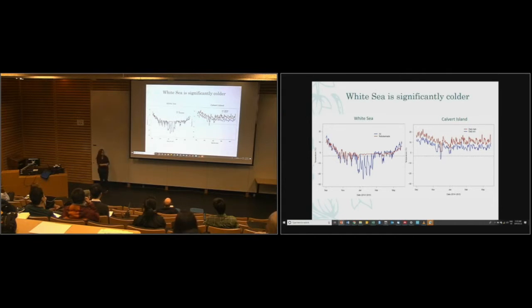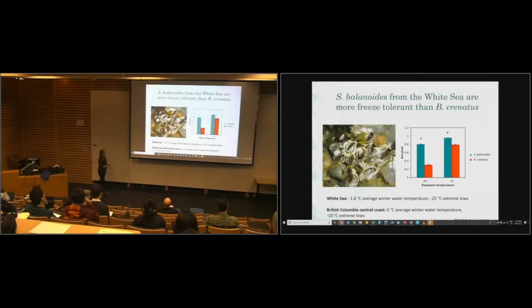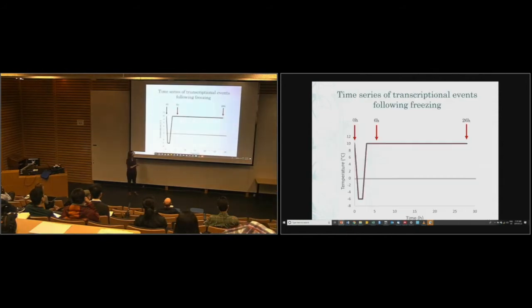What you can see in general is the White Sea and the temperatures that the Robobarnacle experiences are much warmer than the air temperature. The Robobarnacle is still probably experiencing several freeze-thaw cycles. Where on Calvert Island in BC, it tends to be pretty warm. As a result, we expected we might see a difference in freeze tolerance between these two species. And that's exactly what we saw. Here on the x-axis, we have exposure temperature, minus 10 and minus 6. Survival on the y, two-hour exposure. You can see that Semibalanus balanoides is significantly more freeze-tolerant than Balanus crenatus.